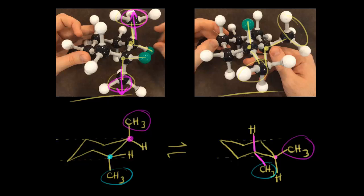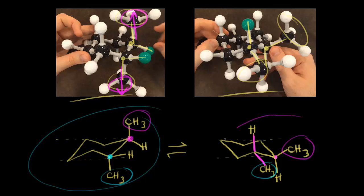If we analyze these two chair conformations in terms of stability, the one on the left has two axial substituents, which is not as stable as the one on the right. The one on the right has our two relatively bulky methyl groups equatorial, which is the best place for them — that decreases the steric hindrance. So the one on the right is the more stable conformation.